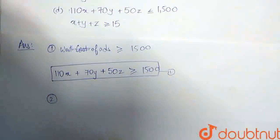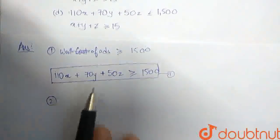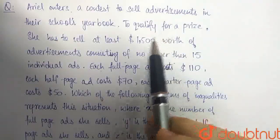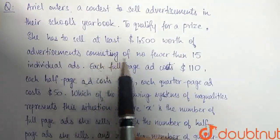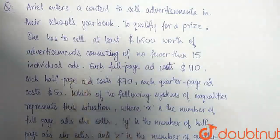Next, for the second inequality, it says that advertisements consisting of no fewer than 15 individual ads. So, number of ads must be at least 15.